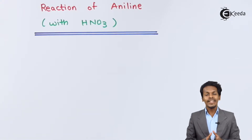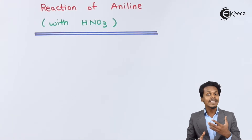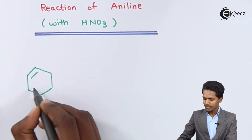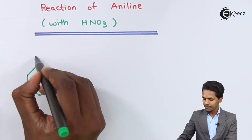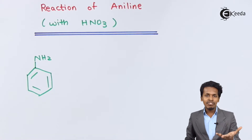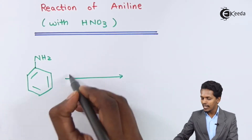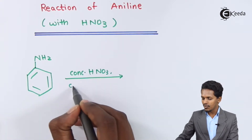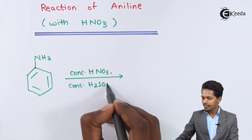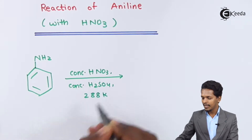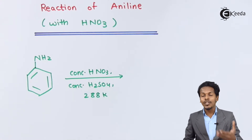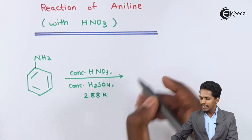We are going to talk about the reaction of aniline with nitric acid, which is basically known as the nitration process. For that, we consider aniline, and nitration takes place in the presence of nitric acid as well as H2SO4 at a particular temperature — specifically concentrated HNO3 with concentrated H2SO4 at around 288 Kelvin.